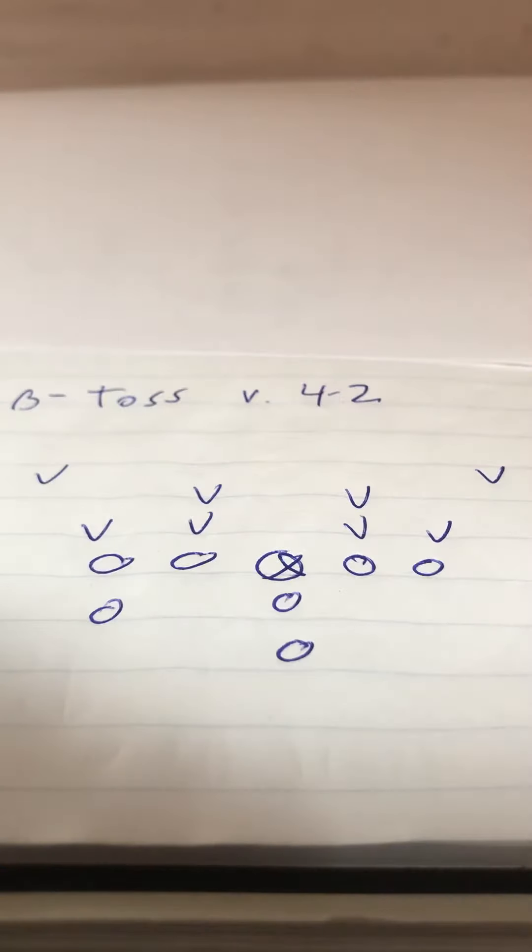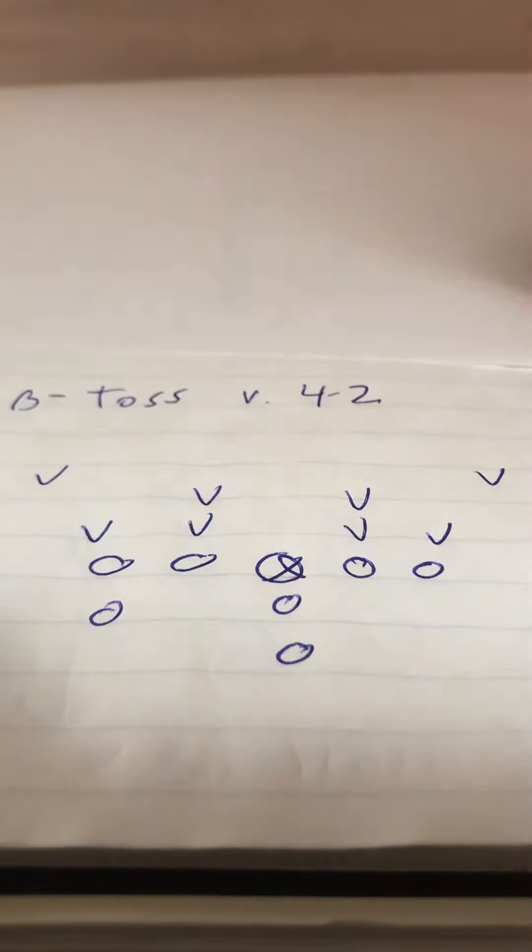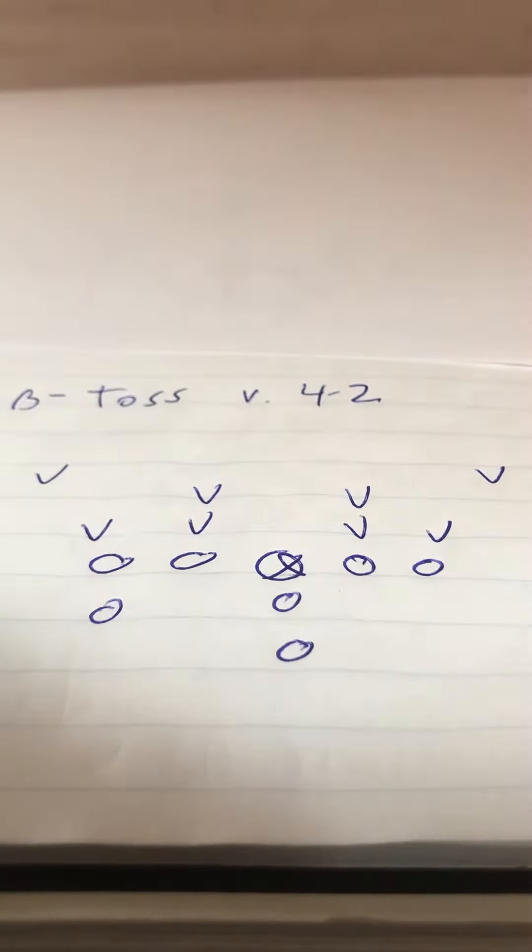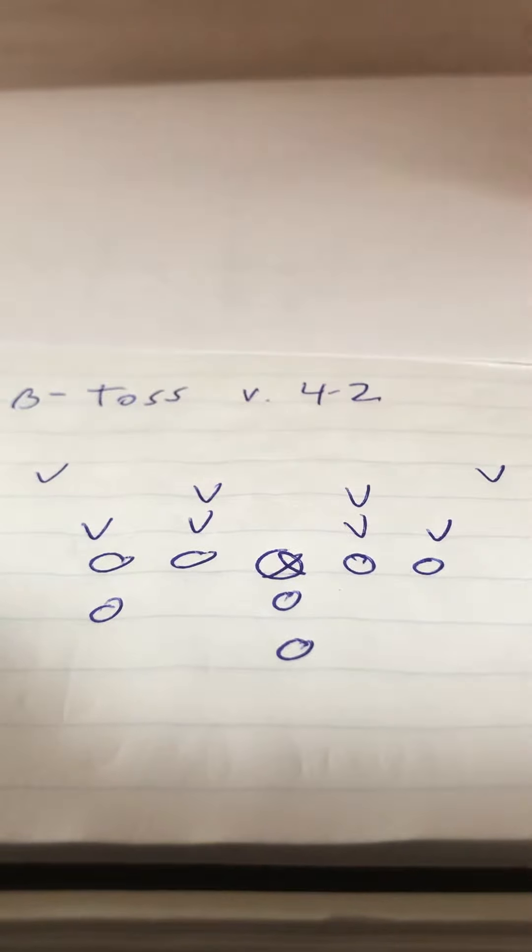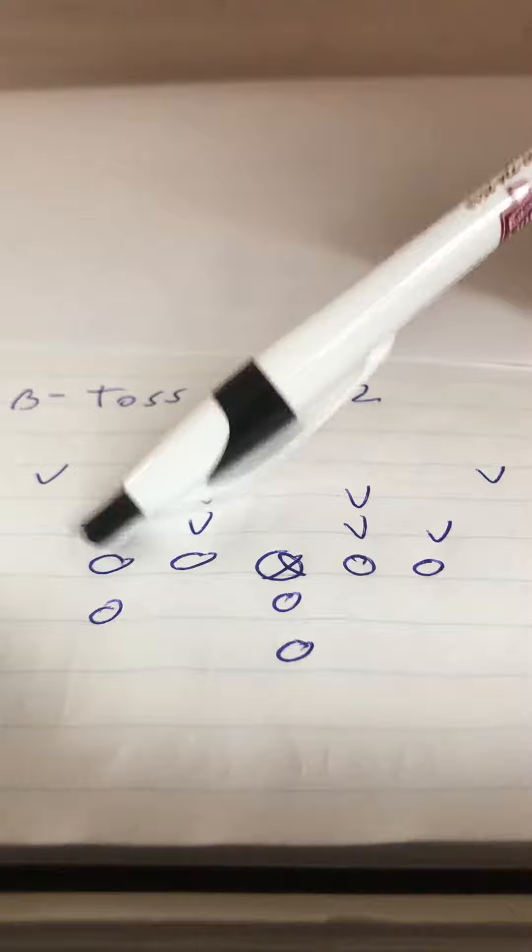When you can't get four yards on the triple option, the answer is to toss the ball outside. Now, in eight-man football, the B-back toss works great because you get a lot of numbers at the point of attack. And you still don't have to block number one, the read key.